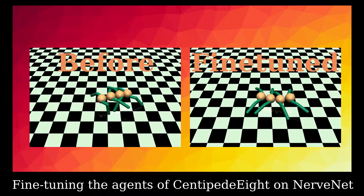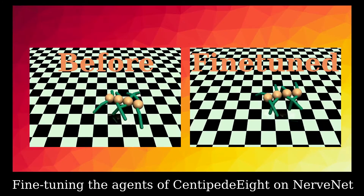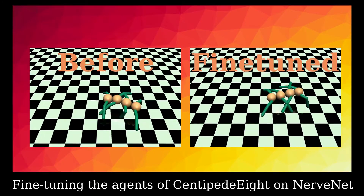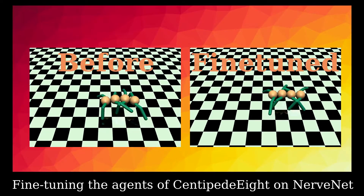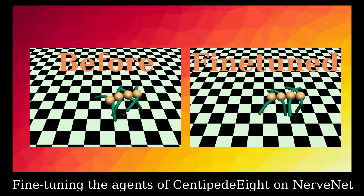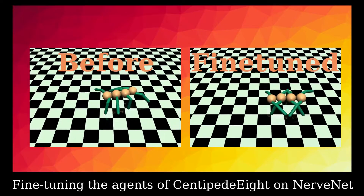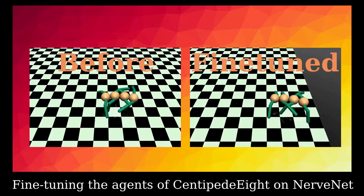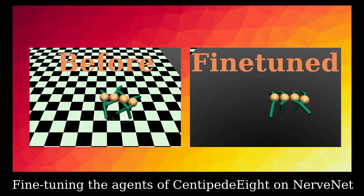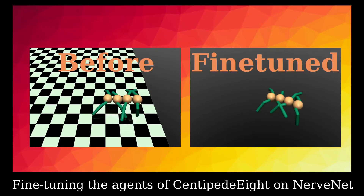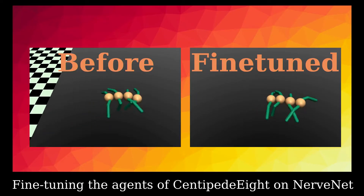Just like what we do in CNN, we could fine-tune the agents on the new environments. After fine-tuning, the agents are more used to the new dynamics. The agent runs faster and is better at controlling the direction as well as the balance.